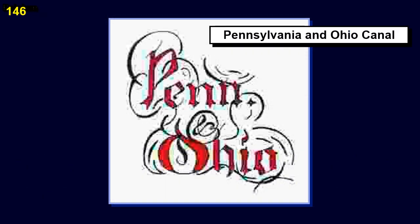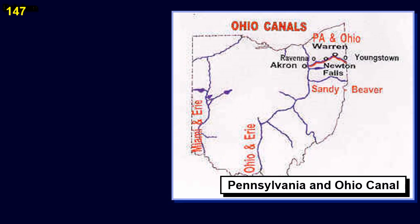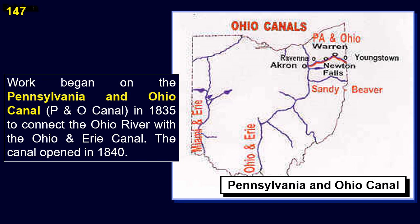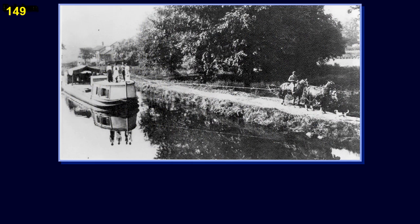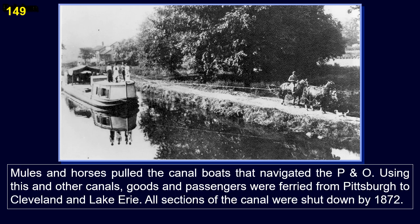The Pennsylvania and Ohio Canal (P&O Canal): work began in 1835 to connect the Ohio River with the Ohio and Erie Canal. It officially opened on August 4, 1840. It ran from New Castle, Pennsylvania, to Akron, Ohio, along old Native American trails and the Cuyahoga and Mahoning Rivers. Mules and horses pulled the canal boats, and goods and passengers were ferried from Pittsburgh to Cleveland and Lake Erie. All sections of the canal were shut down by 1872.